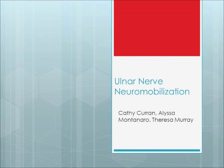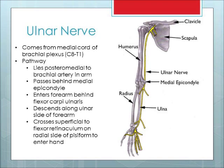This is an instructional video on ulnar nerve neuromobilization. The ulnar nerve comes from the medial cord of the brachial plexus from level C8 to T1. It lies posteromedial to the brachial artery in the arm and passes behind the medial epicondyle through the cubital tunnel. The nerve enters the forearm behind the flexor carpi ulnaris, descends along the ulnar side of the forearm, and crosses superficial to the flexor retinaculum on the radial side of the pisiform to enter the hand.